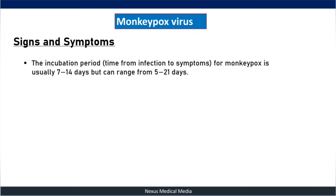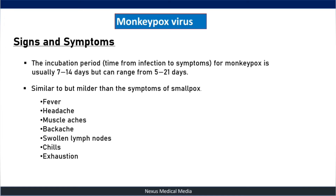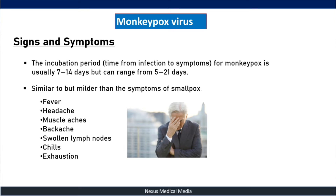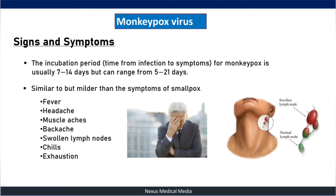Signs and symptoms: the incubation period for monkeypox is usually 7 to 14 days but can range from 5 to 21 days. Symptoms are similar to smallpox but milder, and include fever, headache, pain, swollen lymph nodes, chills, and exhaustion. The lymph nodes typically involved are the cervical, submandibular, and axillary lymph nodes.